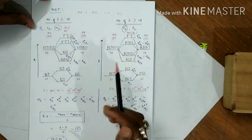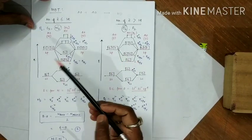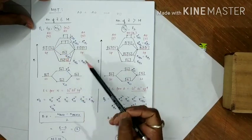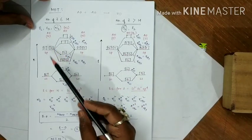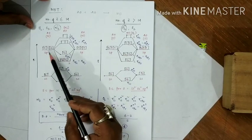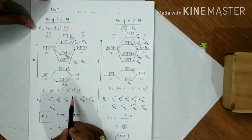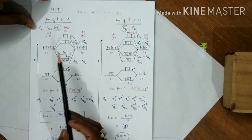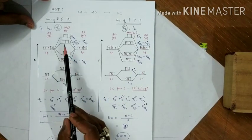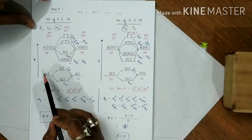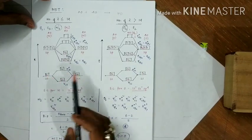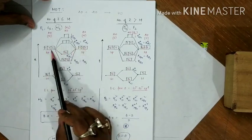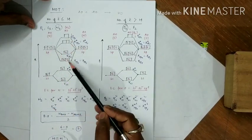To draw the diagram, we write the valence shell orbitals — here we consider just the 2s and 2p orbitals. For nitrogen, the electronic configuration is 1s², 2s², 2p³. On both sides we put the atomic orbitals, and each pair of atomic orbitals combines to give a new set of molecular orbitals.